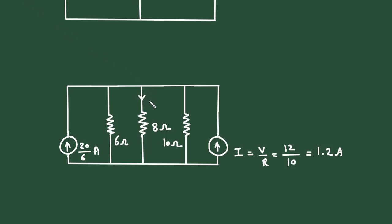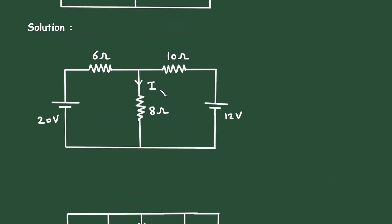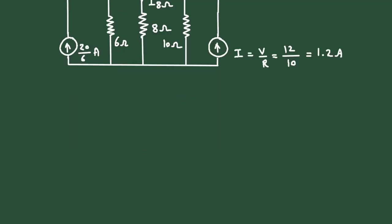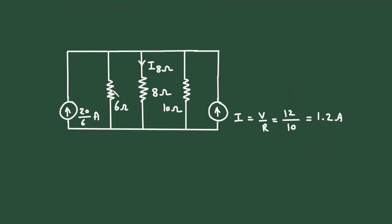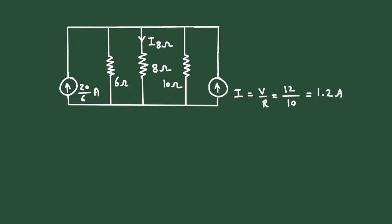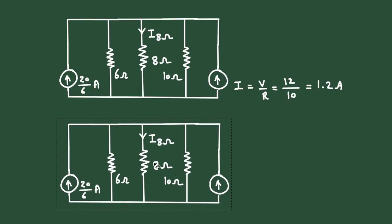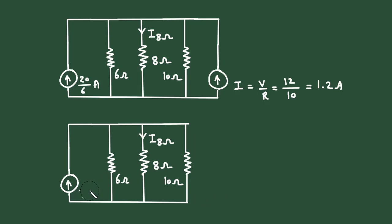Now we have to find the current through this 8 ohm resistance. Let us say this current is I_8ohm. We will keep this 8 ohm resistance as it is and simplify the other circuit. Here we can see this current source and this current source are connected in parallel.